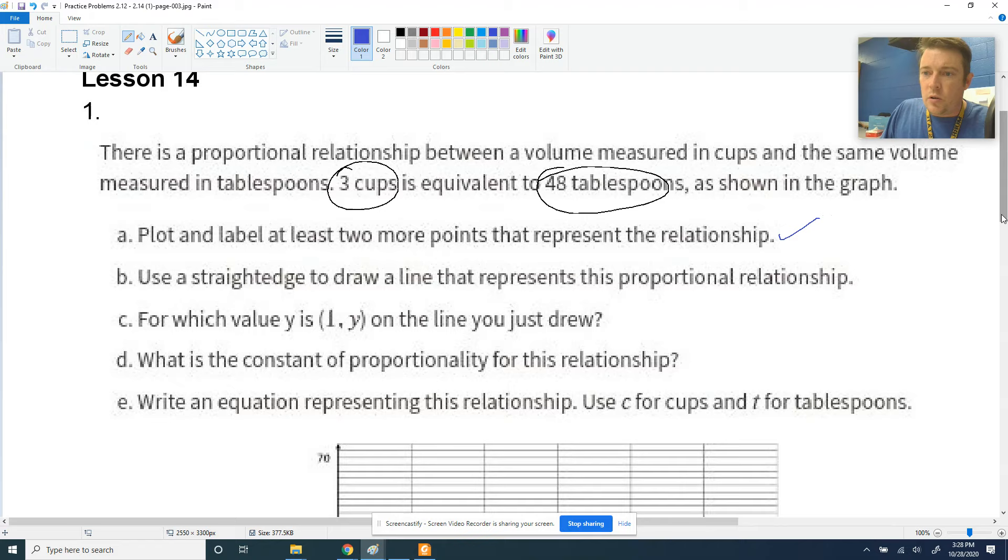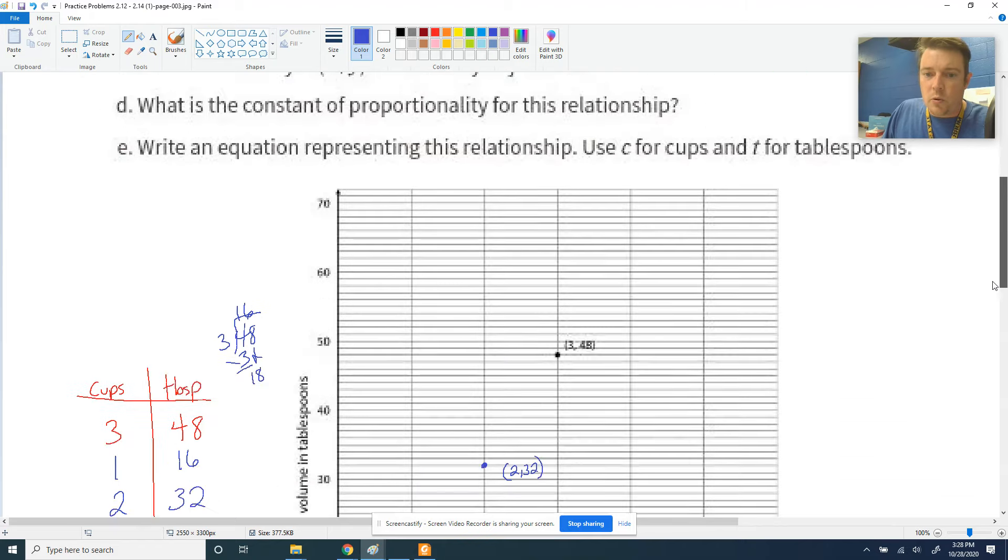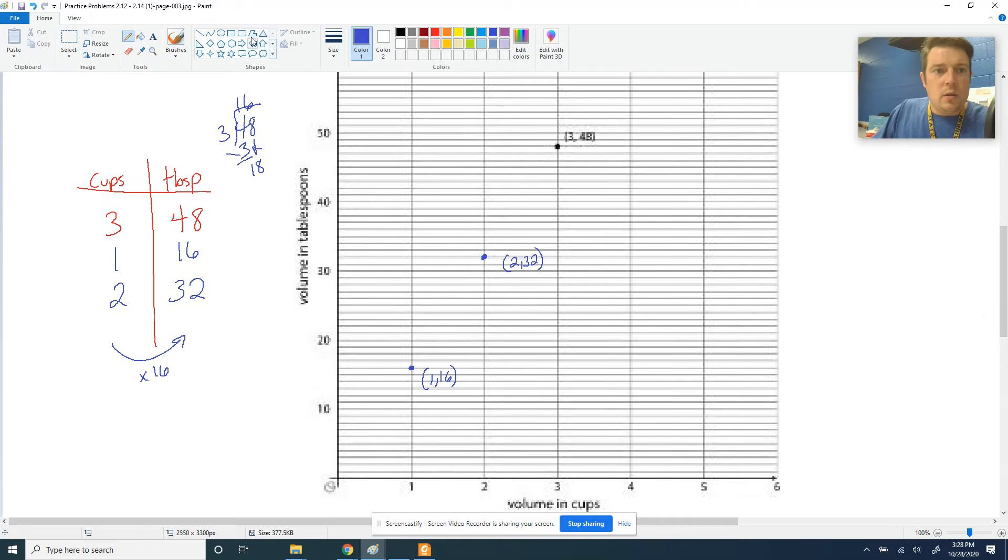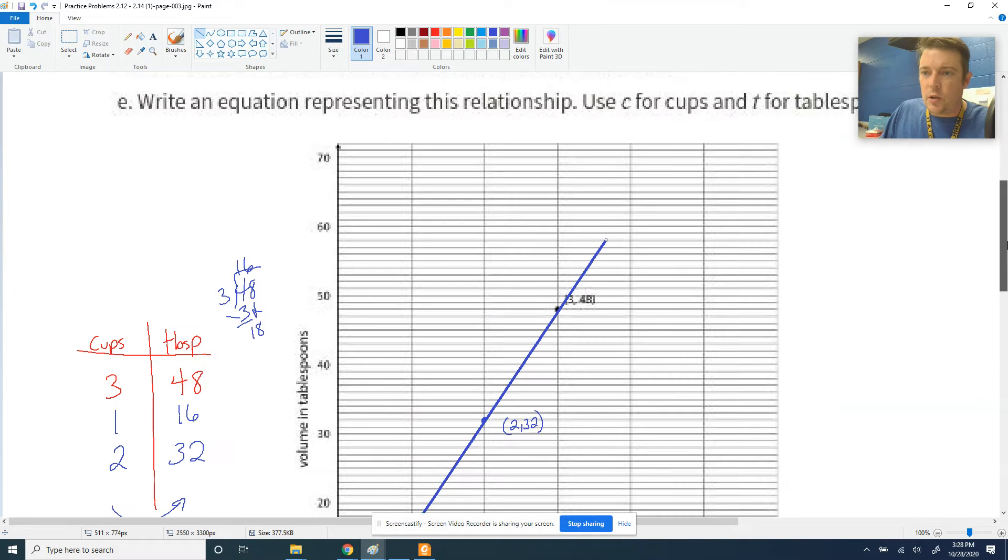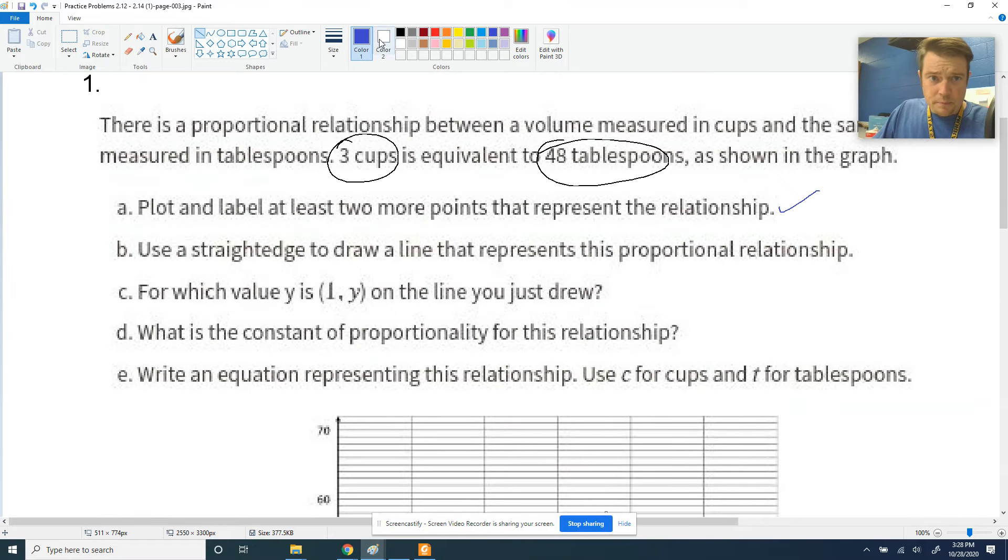Use a straight edge to draw a straight line that represents this proportional relationship. Okay, so I've got a straight edge tool. You might have to use a ruler or a piece of paper with a straight edge along the side. And then just connect all three of your dots that you've created. There's our straight line. So part B, we have done that. Check there.